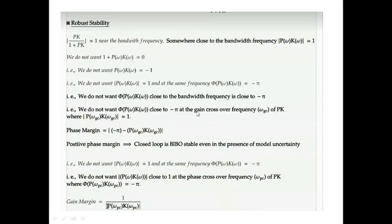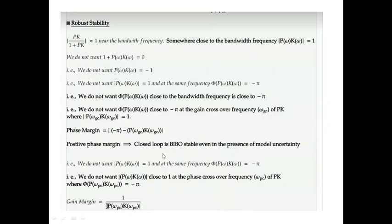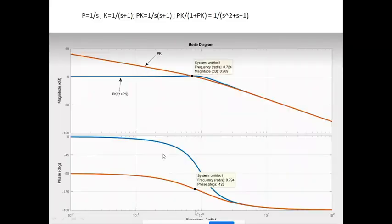Hence, since at the point where the magnitude is 1, which is called the gain crossover frequency, we do not have -π which we desire, the phase margin is defined as -180° minus -128° in this case, so that would be around 52°.